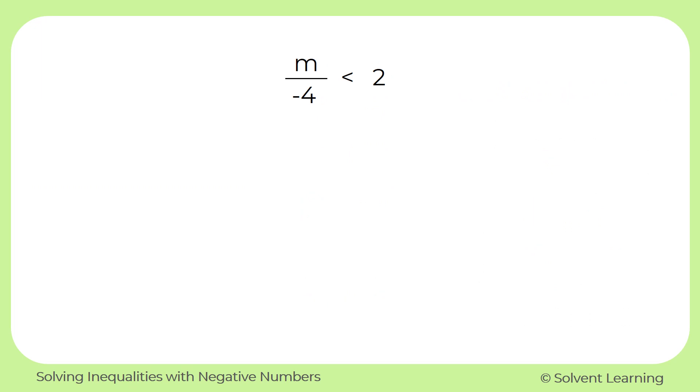For this problem, we have m over negative 4 is less than 2. We'll draw a line down through our inequality symbol and focus on isolating our variable m. Since that fraction represents division, we'll have to use multiplication to undo that negative 4. So we'll multiply by negative 4 on both sides.